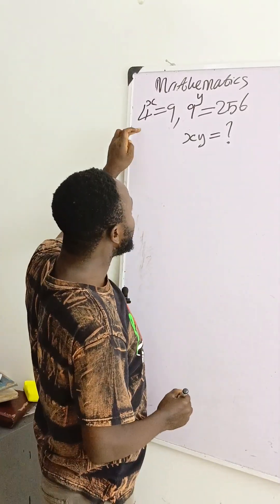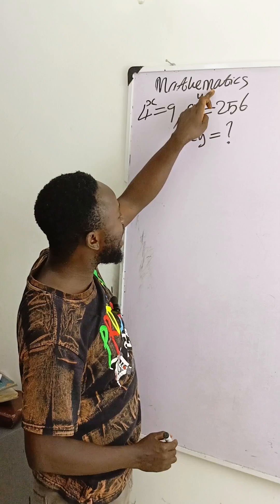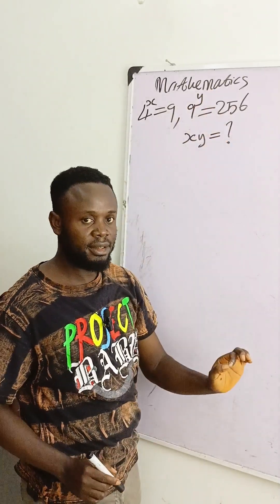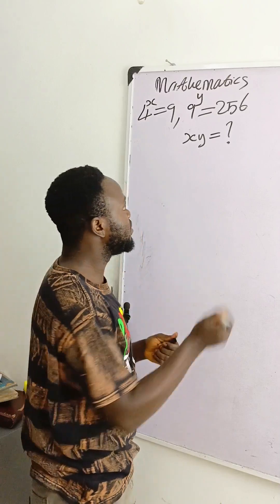What do we have here? 4 raised to power x is equal to 9, 9 raised to power y is equal to 256. What is xy? That's the question. Watch me now.